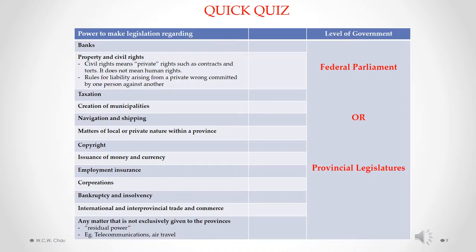Time for a quick quiz. Referring to sections 91, 92, and 93 of the Constitution Act 1867, determine whether it is the federal parliament or the provincial legislatures that have the power to make laws regarding each of these subject matters. Please pause the video and work on this quiz. Once you're done, restart the video. Okay, let's look at banks first. The power to make law about banking belongs to the federal parliament under section 91.15. Specifically, the legislation that the federal government has for banking is called the Bank Act.